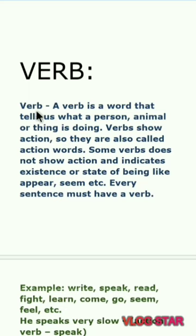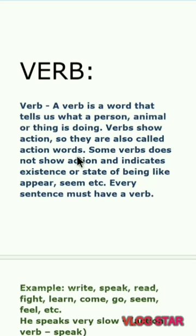Now see the definition of verb. A verb is a word that tells us what a person, animal, or thing is doing. Verb is a word that tells us that any person or any kind of thing is working. These words which tell us that any person or thing is working are called action words.